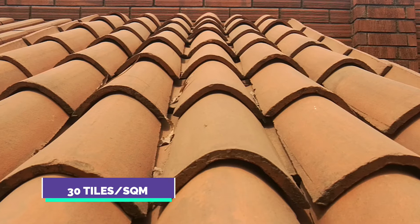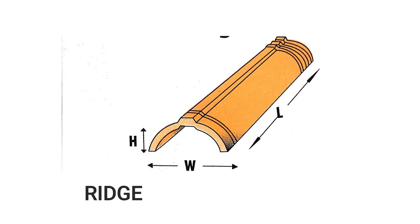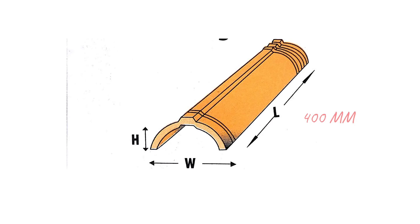A single Spanish tile costs 21 shillings. Now let's look at two important accessories you will need with clay roofing tiles. The first accessory is called the ridge. You will need this at the top of your roof where two tiles meet. Its job is to act as a transition between one opposing face of your roof and the other. The dimensions are 400 millimeters in length, 220 millimeters in width, and 100 millimeters in height. You will need 3 pieces per square meter and a single ridge costs 75 shillings.